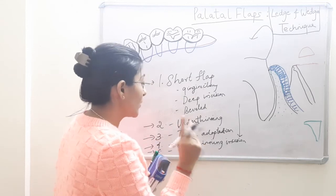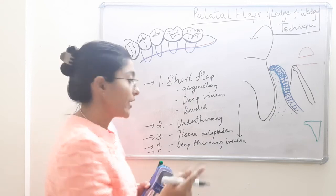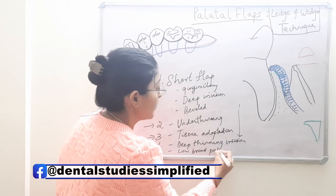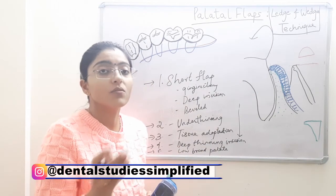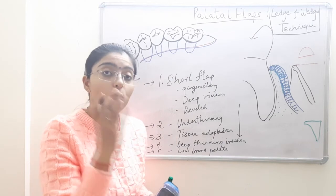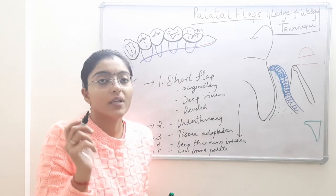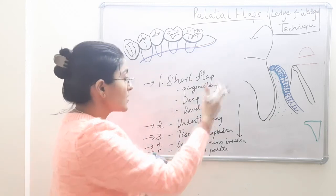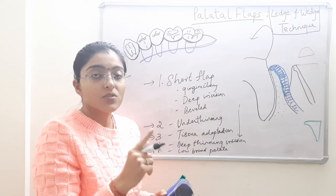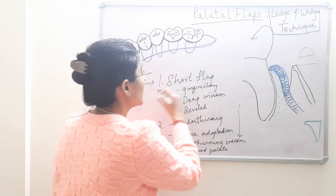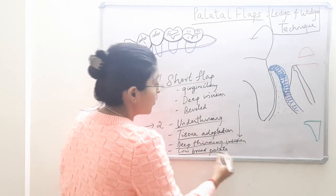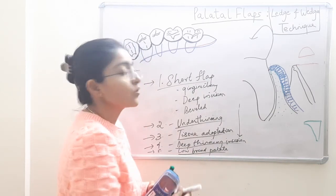One more factor which may lead to palatal artery damage is a low broad palate or a shallow palate. In a shallow palate we should be very careful with our incisions, because if we try to give a regular measurement incision in a low palate we may end up damaging the palatal artery. So the common errors in modified partial thickness flap procedure are: short flap, underthinning of the flap, tissue adaptation issues, deep thinning incision, and low incisions on a low and broad palate.